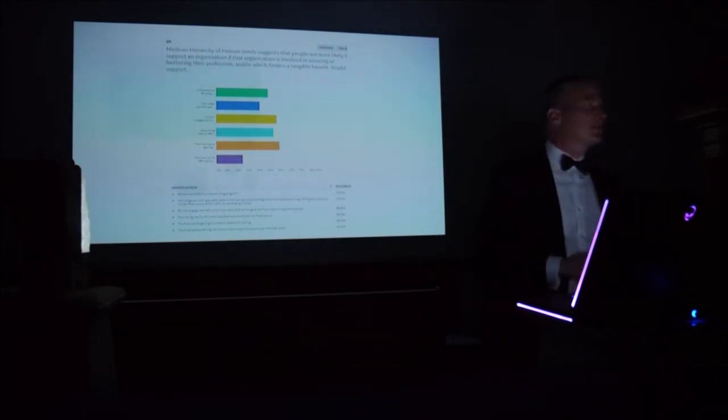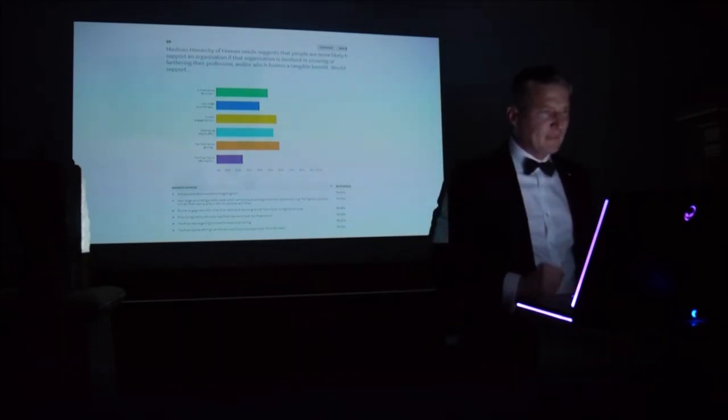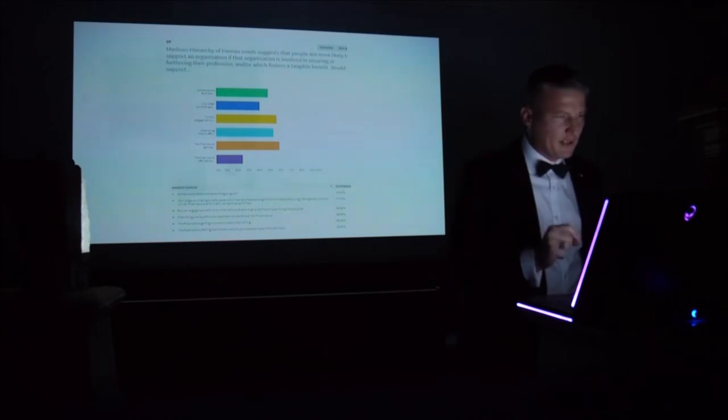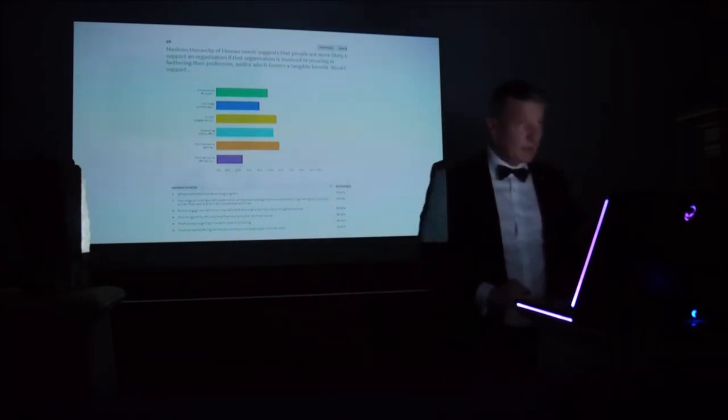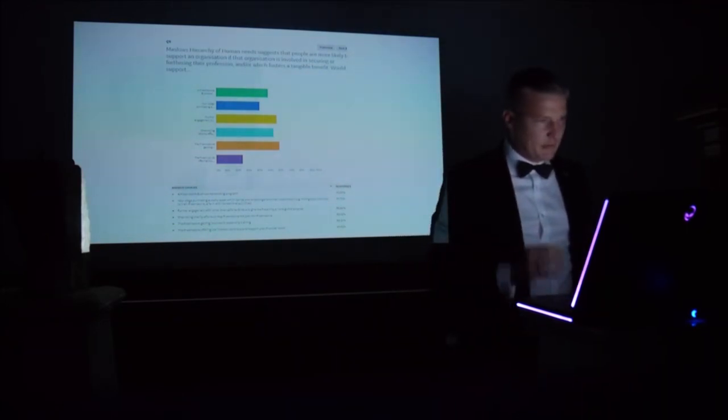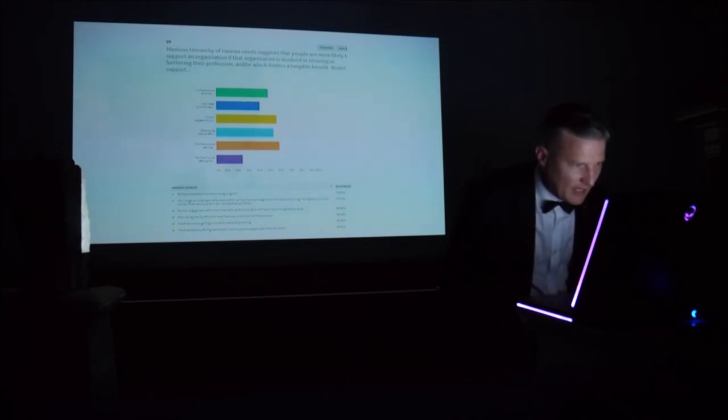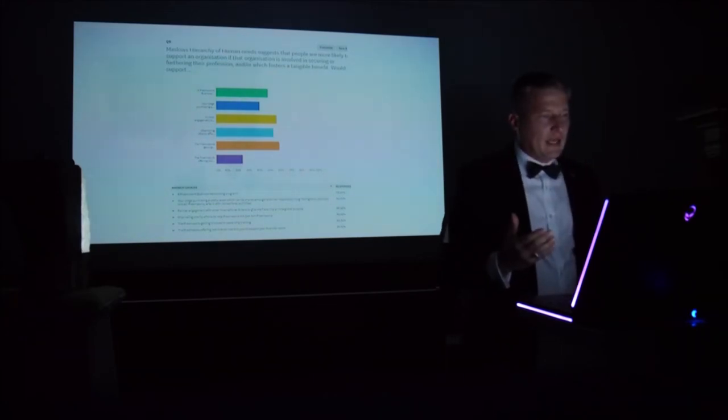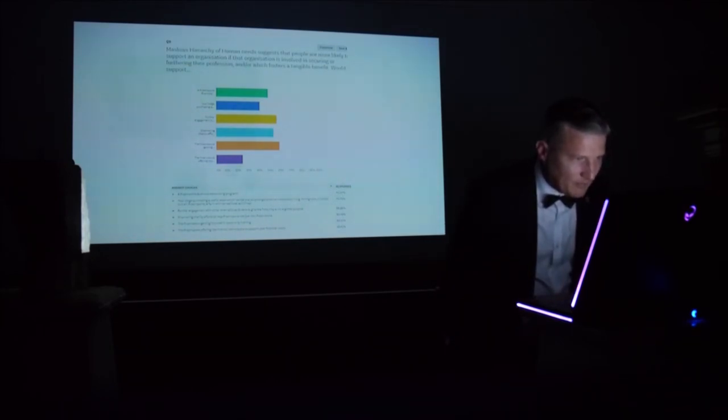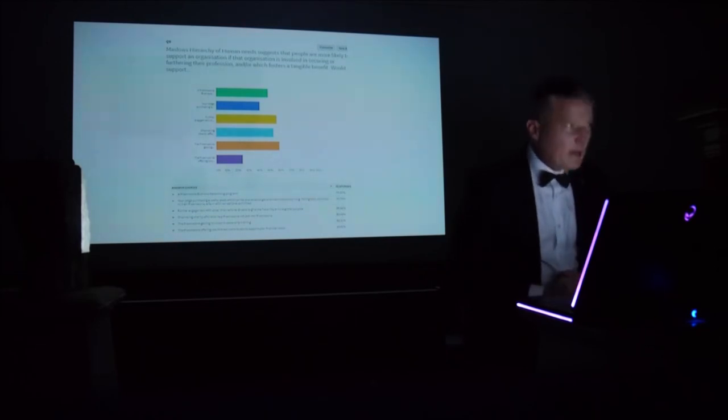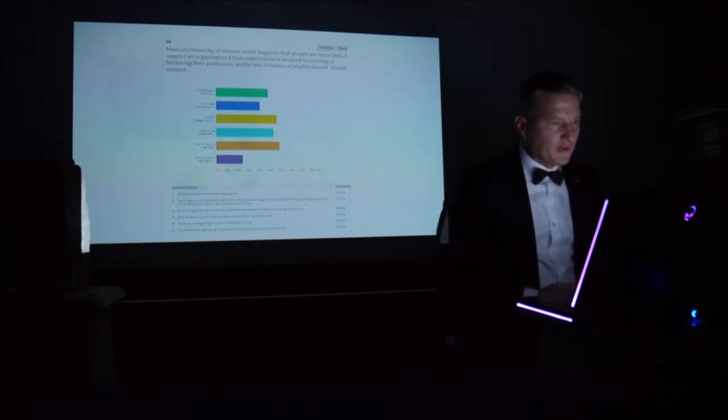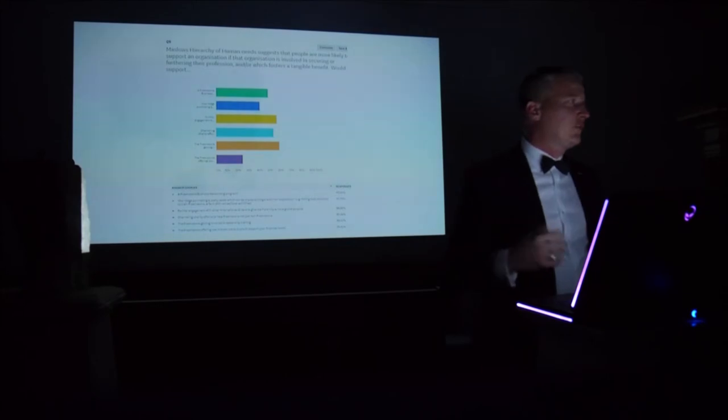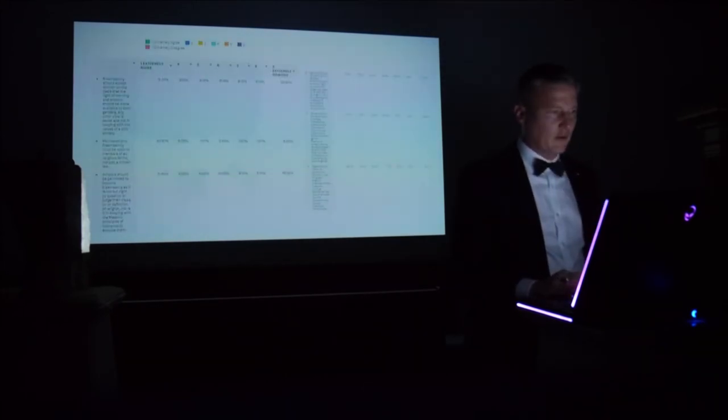Maslow's hierarchy of human needs suggests that people are more likely to support an organization if that organization is involved in securing or furthering their profession or which fosters a tangible benefit. There may be moral arguments, of course, in Freemasonry we point out that you shouldn't join for that type of benefit. But nonetheless, people essentially said that they were interested in undertaking more leadership training within Freemasonry, perhaps introducing some business networking programs, so not a direct benefit but perhaps a networking benefit, and further engaging in other international orders to give the fraternity a more global purpose, 56%.